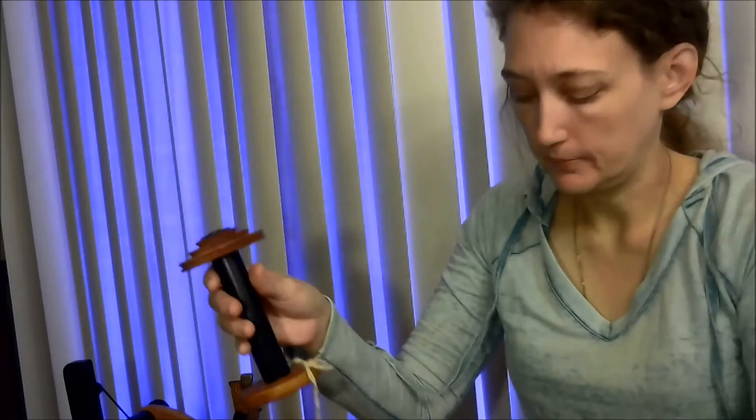I have a bobbin lead wheel, which means that my wheel has more pull than the other two standard models, which are flyer lead and double drive band. The reason why my wheel is a bobbin lead is because the whorls that the drive band attaches to are on the bobbin.